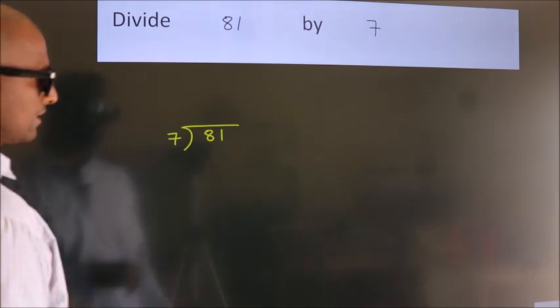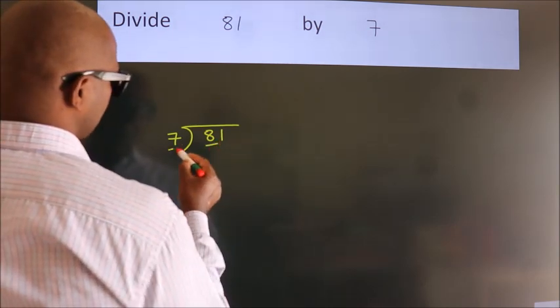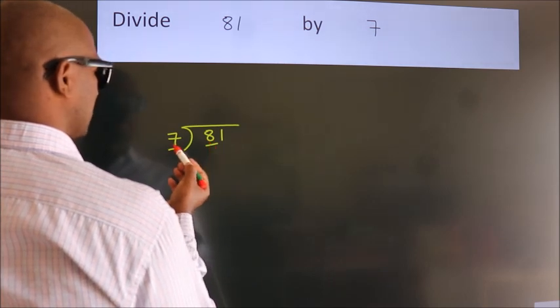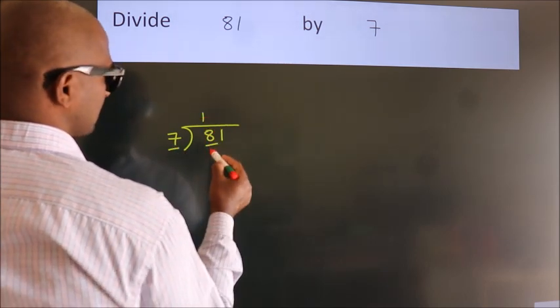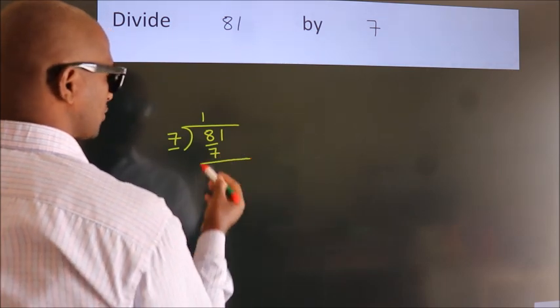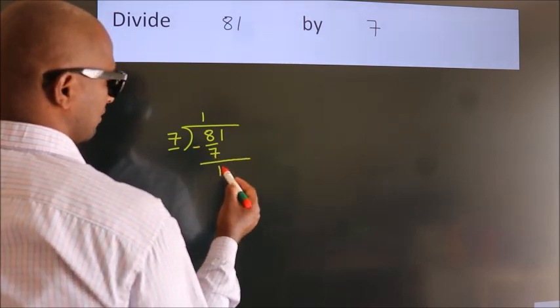Next, here we have 8, here 7. A number close to 8 in the 7 table is 7 ones, 7. Now, we should subtract. We get 1.